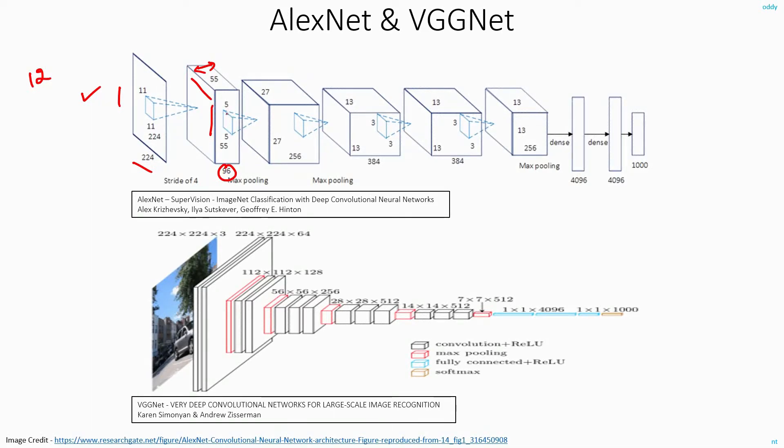The height and width of the feature map was 55 by 55. And in this layer, they used a 5 by 5 filter. And they got an output of 27 by 27.